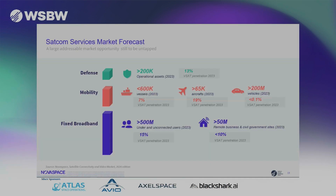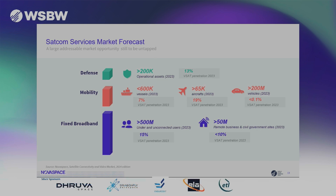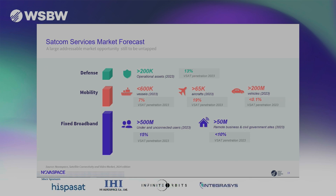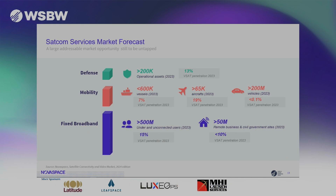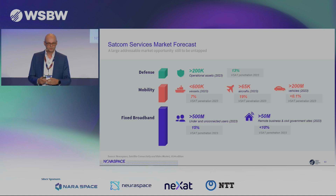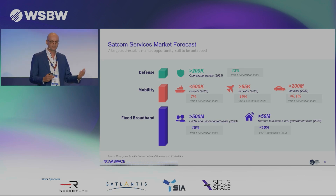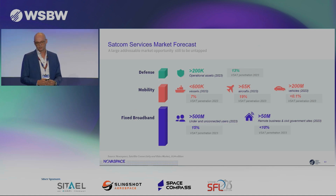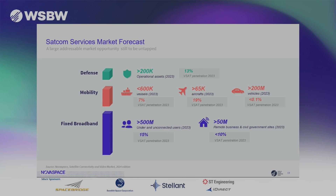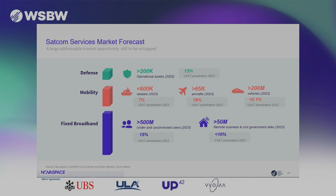If you look at the addressable market and current Satcom penetration, there's a lot of room for growth. Fixed broadband, looking at the underserved or unserved population even based on affordability metrics, current Satcom penetration is about 15%. Remote businesses or civil government sites: penetration is still below 10%. On the mobility side, there's significant variation — more penetration in aero IFC and rapidly growing, but maritime is only 7%, and land mobility, more of a new emerging application, is less than 1%. Defense, a market that has historically been a Satcom user, still only about 13% of the available assets that could be connected are connected to Satcom today.